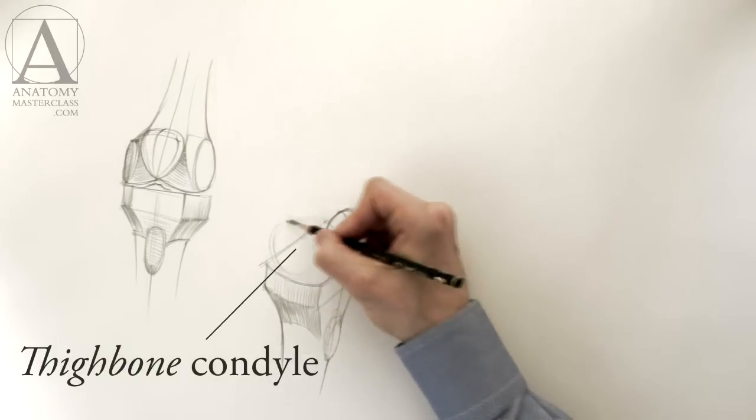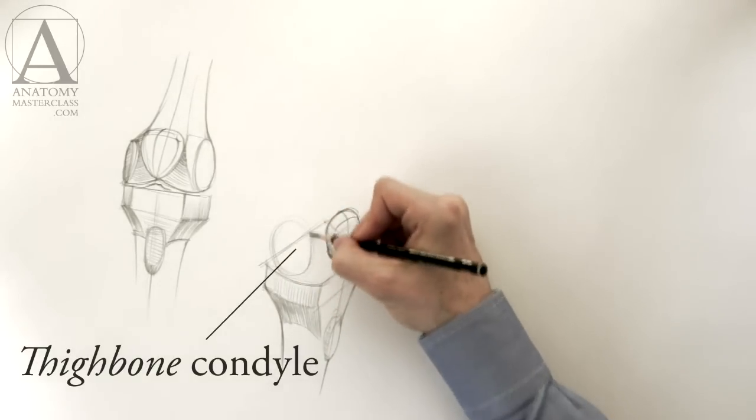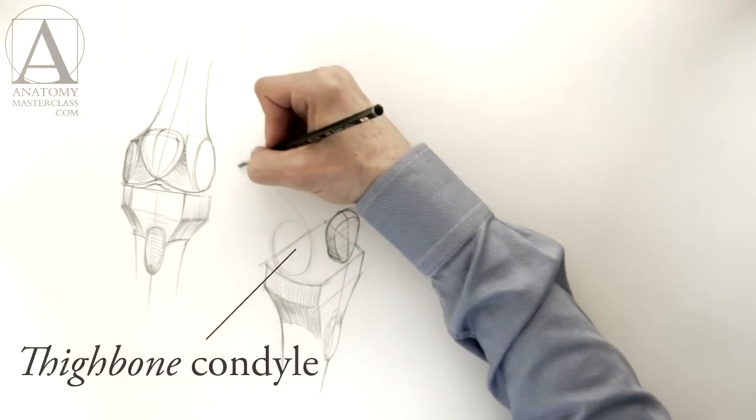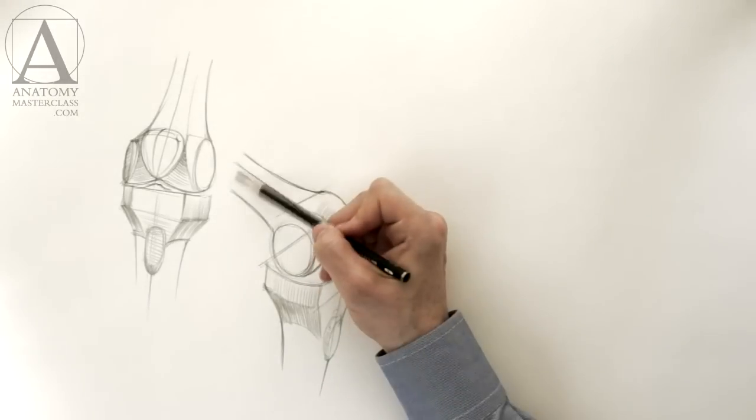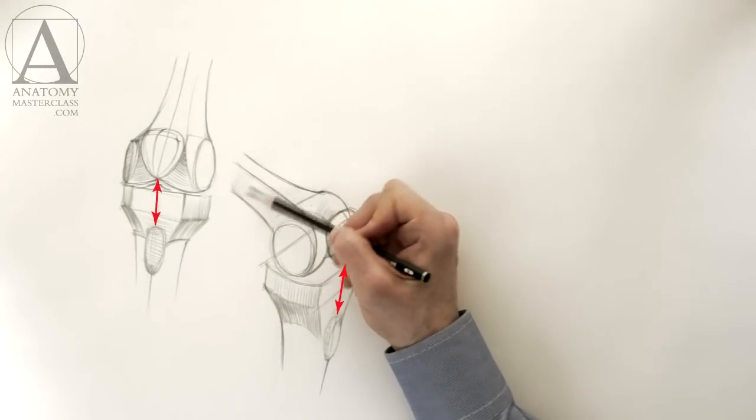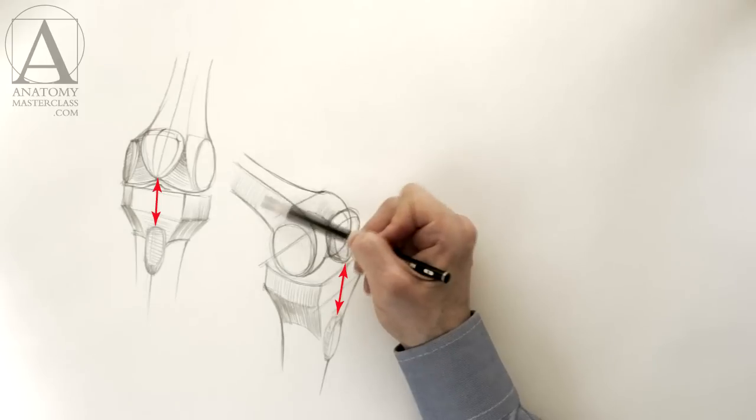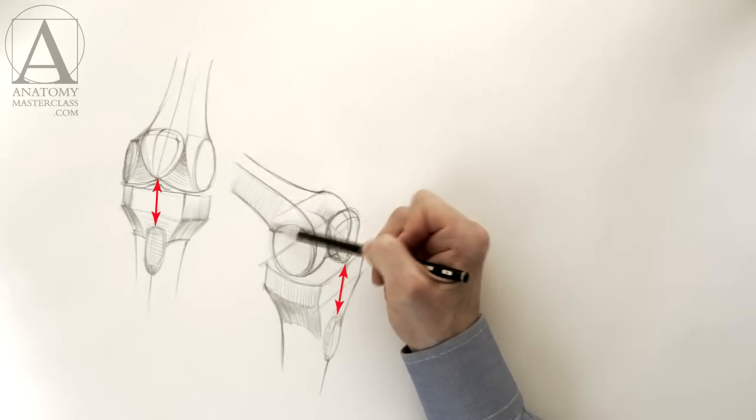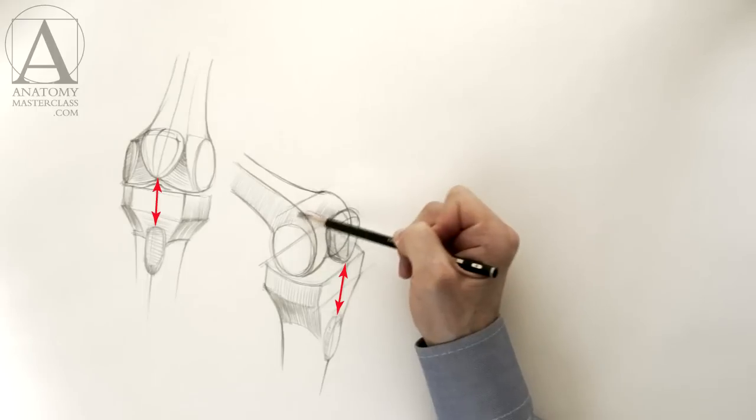Here, you can see the condyle of the thigh bone. It has a round shape which makes it a hinge. You can see that the distance between the kneecap and the tibial tuberosity remains the same regardless of the bent or extended position of the leg.